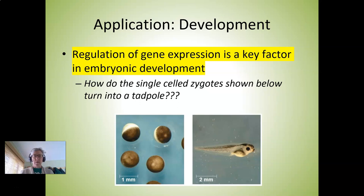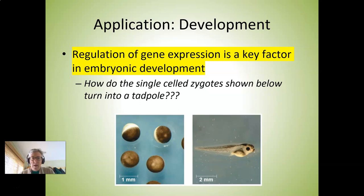This is about development. Here's a picture showing a fertilized egg tadpole on the left and an actual tadpole on the right. The question is: how does that happen? How does a single-celled zygote turn into a tadpole? In general, cells are organized into tissues, which are organized into organs, then organ systems, and then the whole organism. This pathway of development happens at the level of regulation of gene expression in each phase.